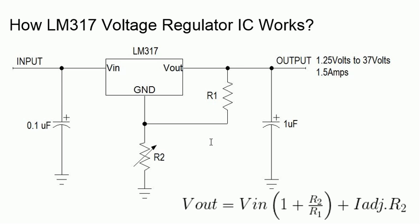By adjusting that value, you can set the output voltage depends upon your requirement. It can be 1.25 to 37 volts. And input should be some 2 volts more than the output voltage, then only it will give proper regulation.